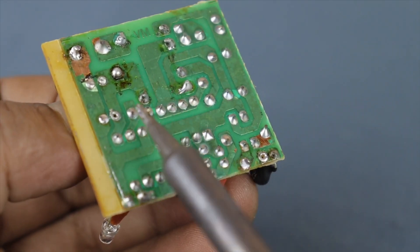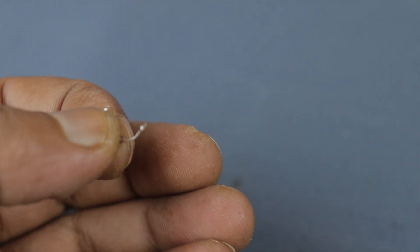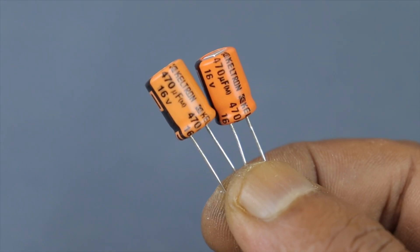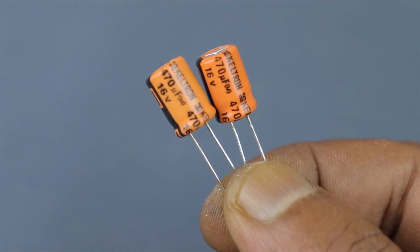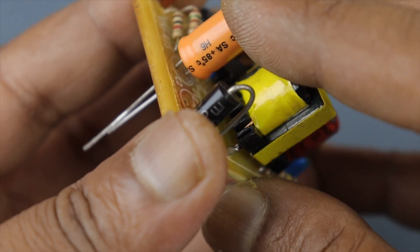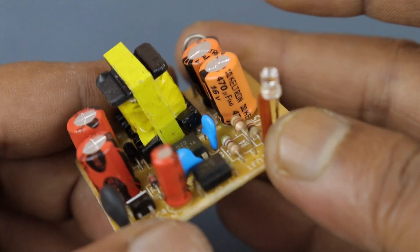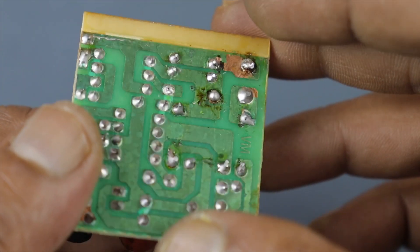Now removing the Zener diode. You can see it's rated 4.7V. Connecting two 16V capacitors. If you want the output to be 12V, then use a 12V Zener diode in place of the 4.7V one and the output voltage will be 12V. Very easy.